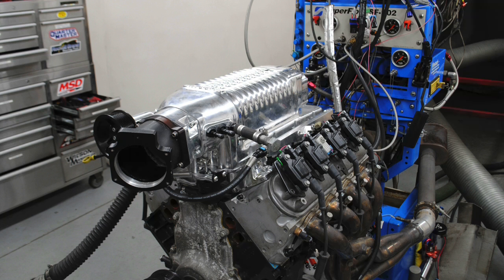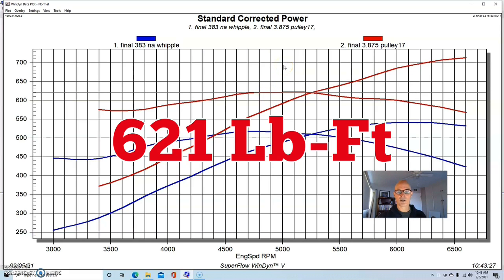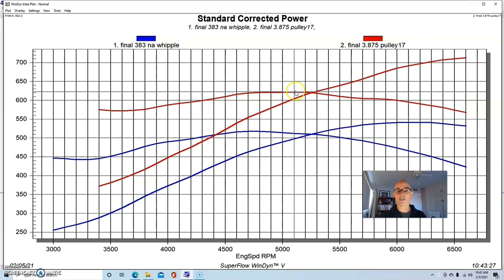Now let's see what happened when we added our Whipple supercharger. To start off we installed a 3.875 blower pulley on our Whipple with the same 102mm throttle body. Running a peak of 7.4 pounds of boost with this pulley out at 6600 RPM, this combination made 712 horsepower. Peak torque checked in at 622 foot-pounds. In typical positive displacement Whipple supercharged fashion, this thing added power basically everywhere.